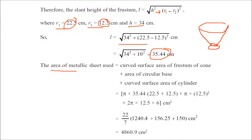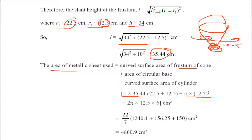The area of the metallic sheet = curved surface area of the frustum of the cone + area of the circular base (π r²) + curved surface area of the cylinder (2π r h). The base radius is 12.5 cm. We do not consider the handle of the bucket. Adding all three components gives the total area of metallic sheet as 4860.9 square centimeters.